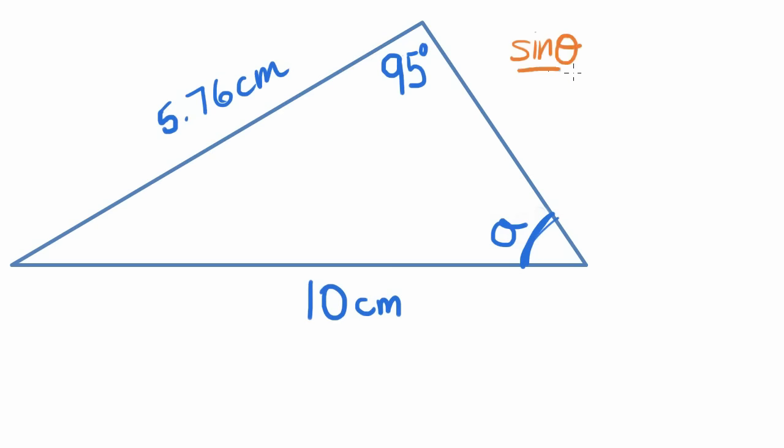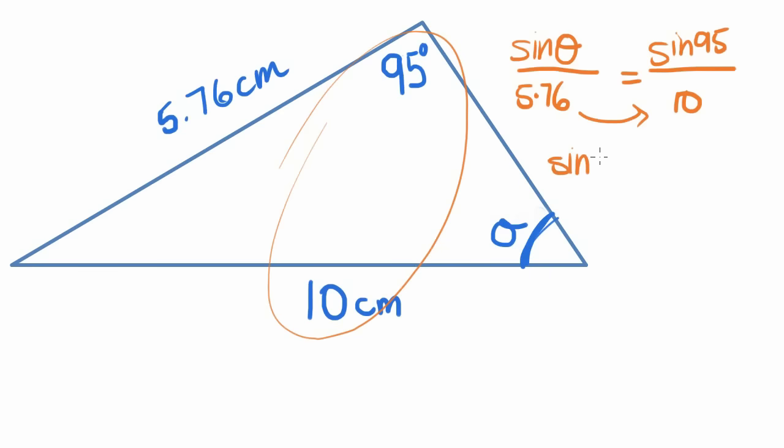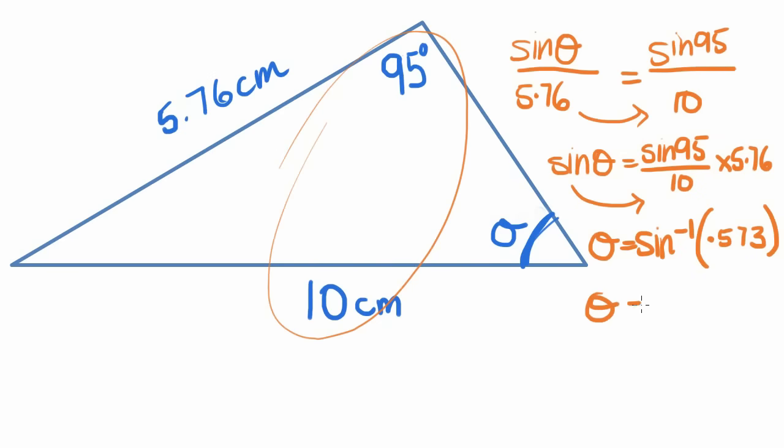So I'm going to have sine of theta, that unknown, divided by its side, which is 5.76. And that's going to be equal to the other matching set. Now this time I have angles on the top and sides on the bottom. So I'm going to have sine of 95, because we want the sine angle both on the top or both on the bottom. That's divided by 10. Now to get this 5.76 over to the other side, I'm going to multiply it over there. So I end up with sine theta equals sine of 95 divided by 10 times 5.76. Now to undo the sine business over here, the inverse of that operation is to take the inverse sine. So theta equals the inverse sine, which on your calculator looks like sine to the negative one, of all of this information. And what do you know? I end up with theta equals 35 degrees.